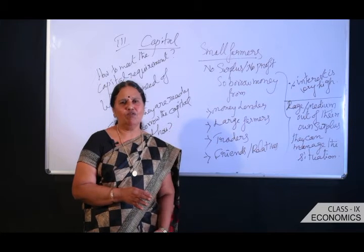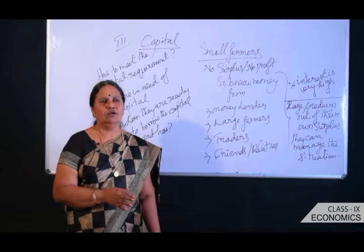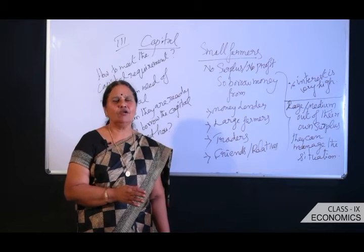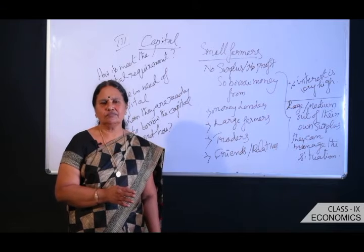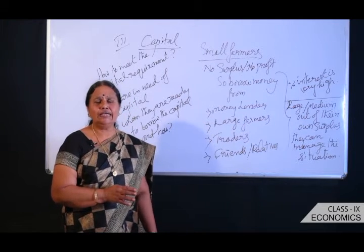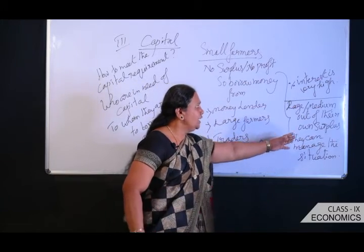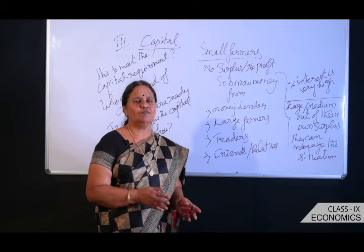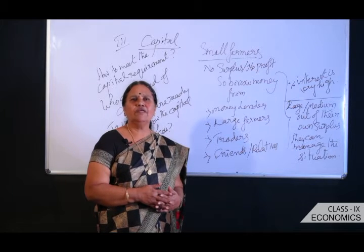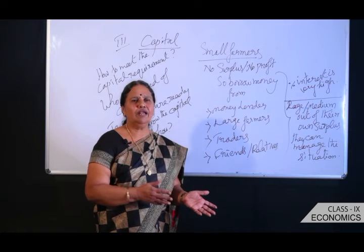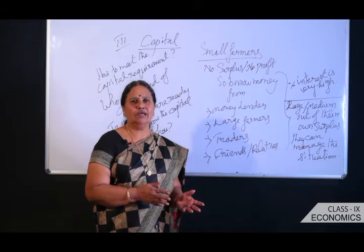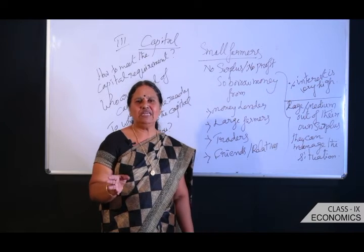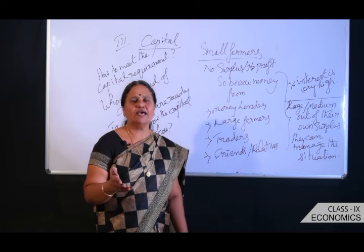When large farmers have surplus produce, they are ready to sell it in the market and get huge profit. But farmers like Gobind's sons or Savita have no surplus to sell — whatever food grains they produce are used to meet their own family needs. Large farmers like Tejpal Singh go to the market, sell the surplus, and earn huge profit.